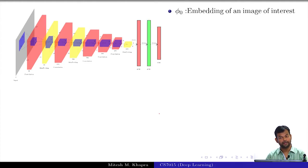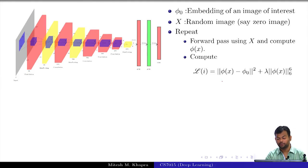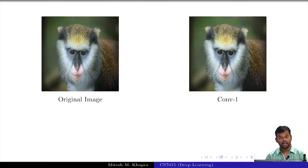Let phi_0 be the embedding of the image of interest, let X be a random image and we will repeat this forward pass using X and compute phi of X—that means we are computing the embedding of this random image that we have started with. Then we compute this loss function and add appropriate regularization for that and back propagate and update what? You will update your X matrix and you will keep doing this till convergence.